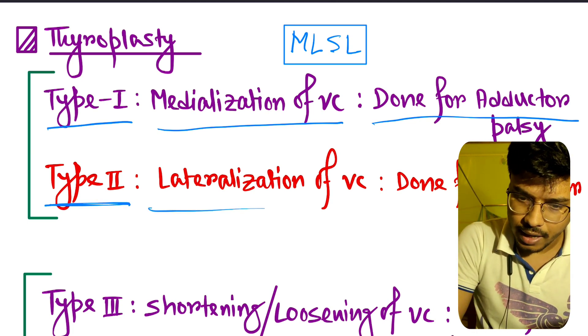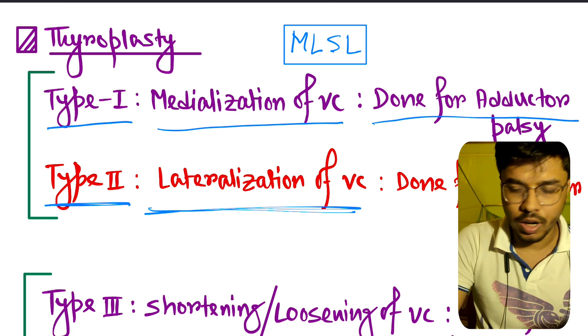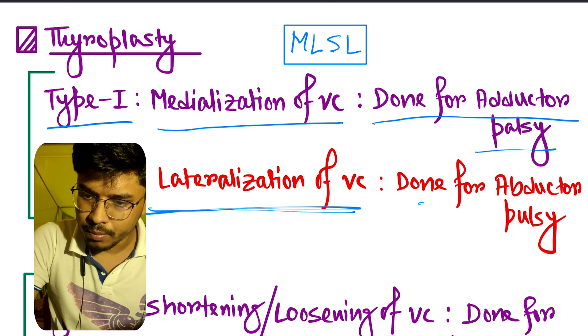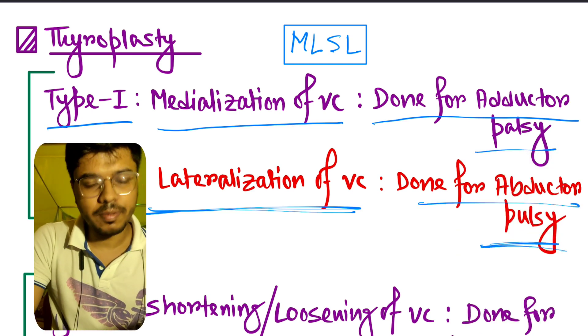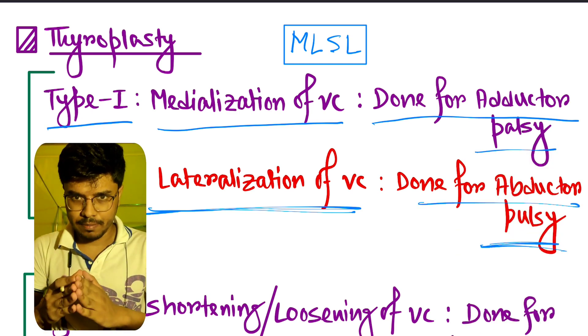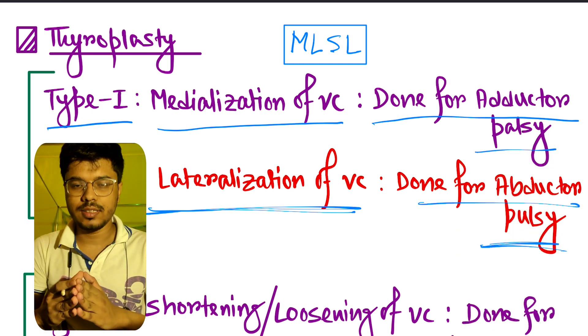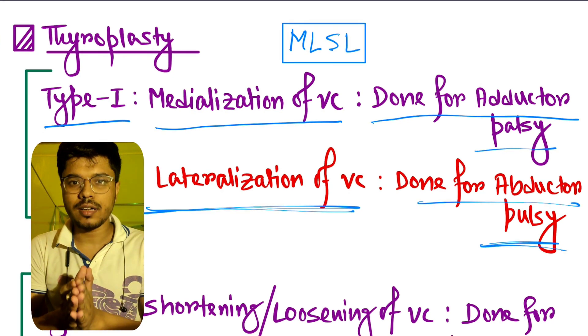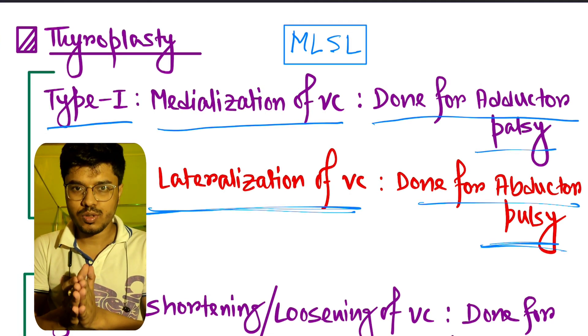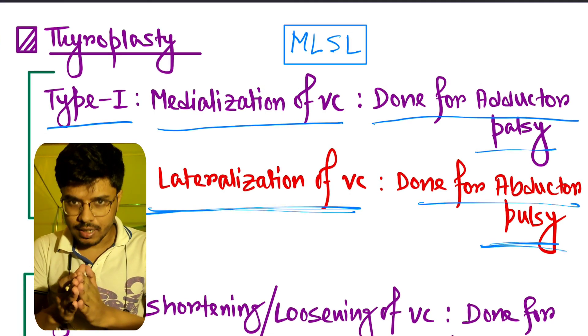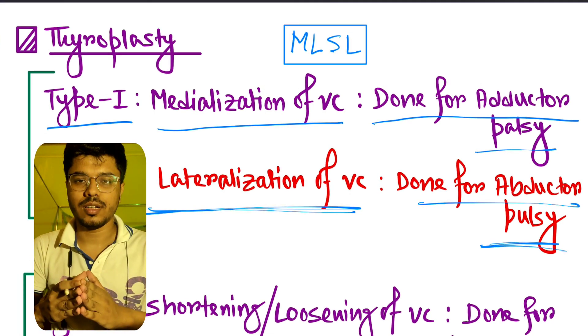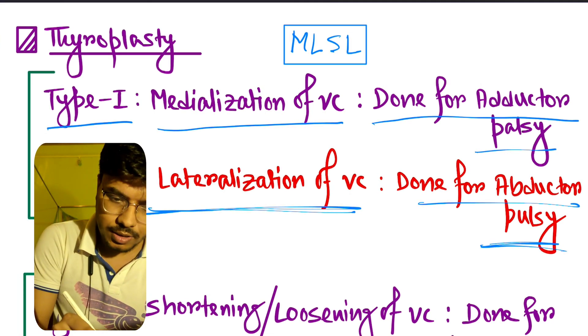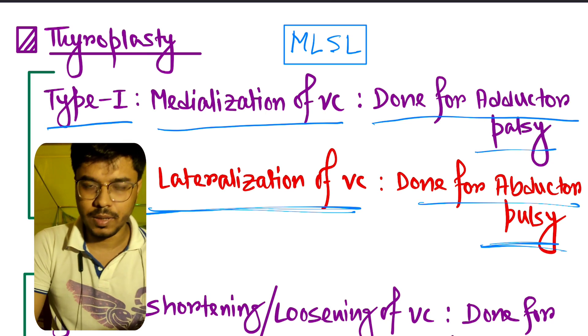Type 2 thyroplasty is the lateralization of the vocal cord. It is done for abductor palsy. If the abductors are paralyzed, then the vocal cord is in the adducted position, so we have to lateralize the vocal cord — this is Type 2 thyroplasty.